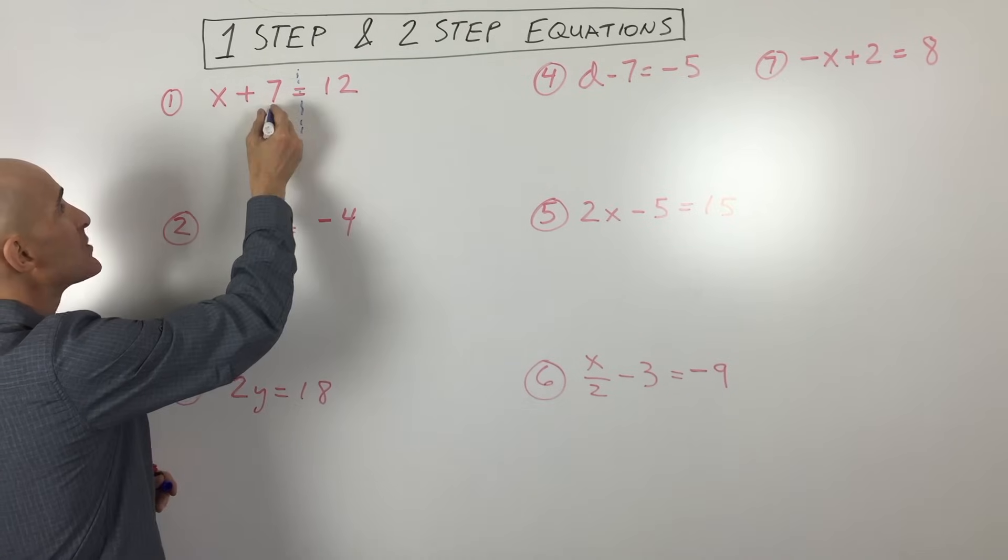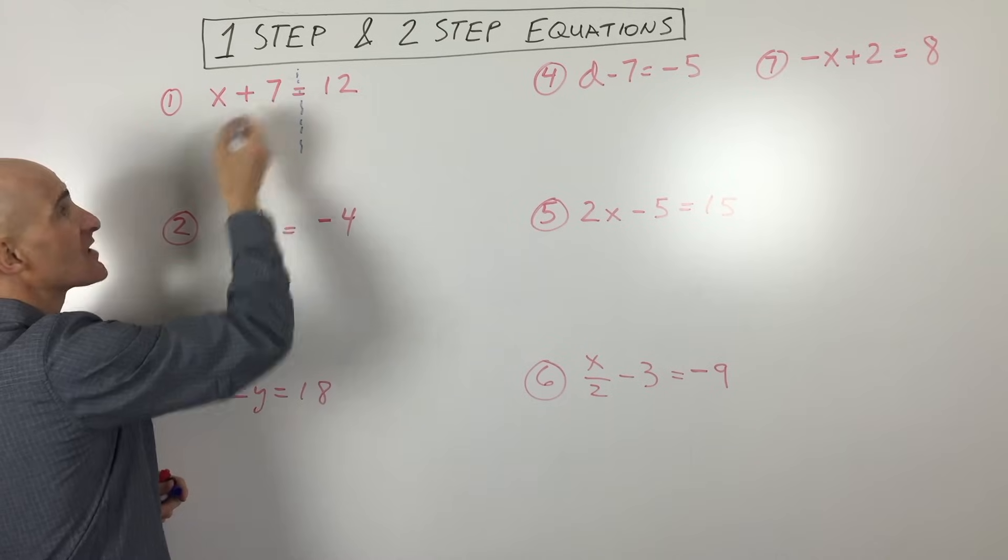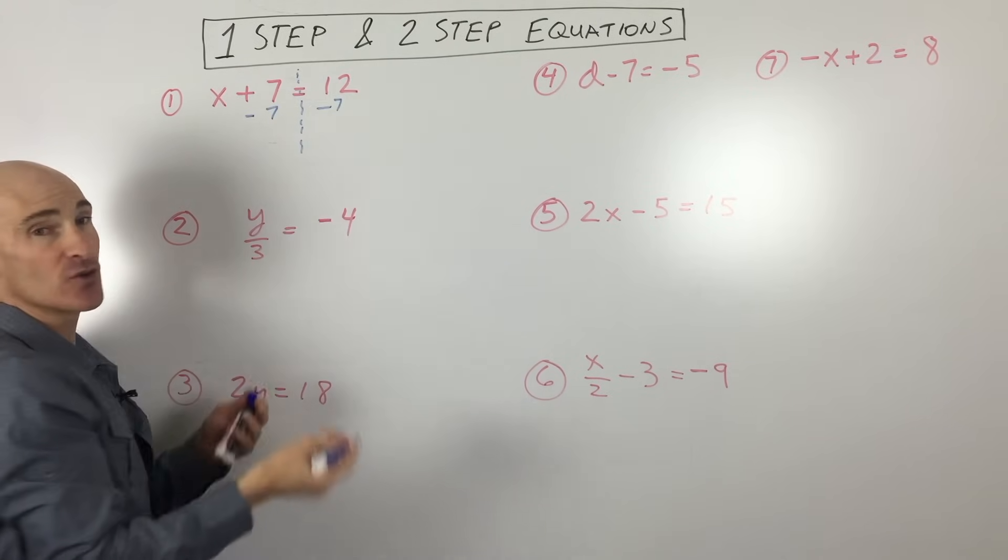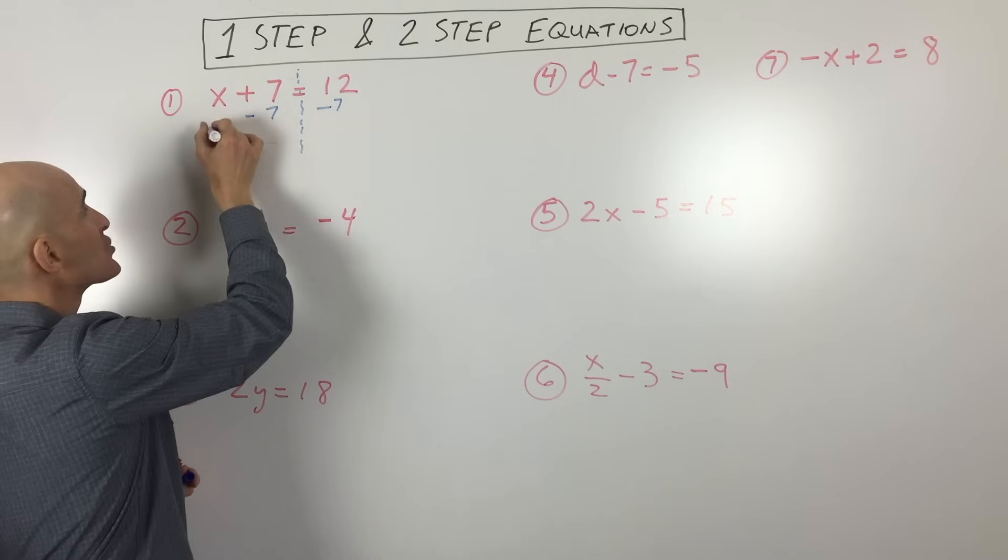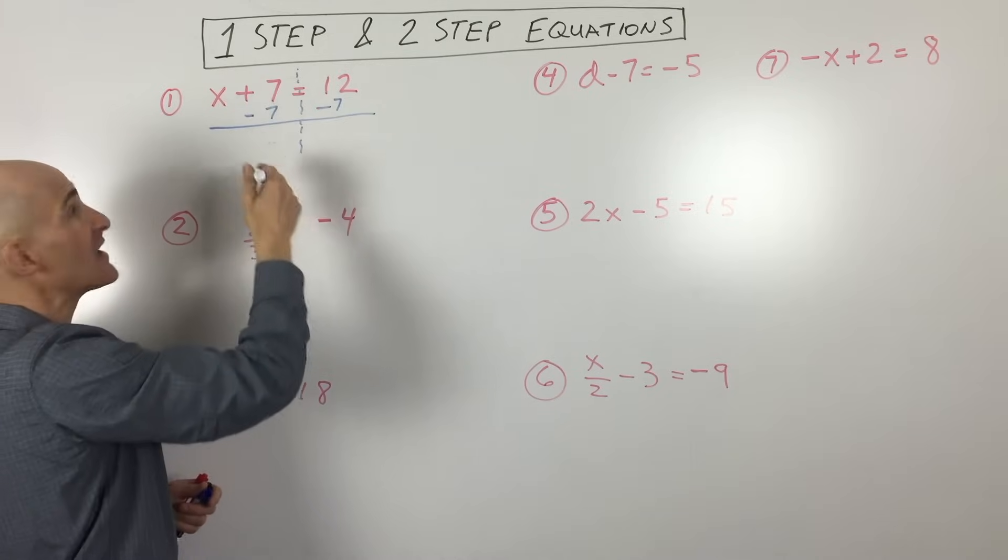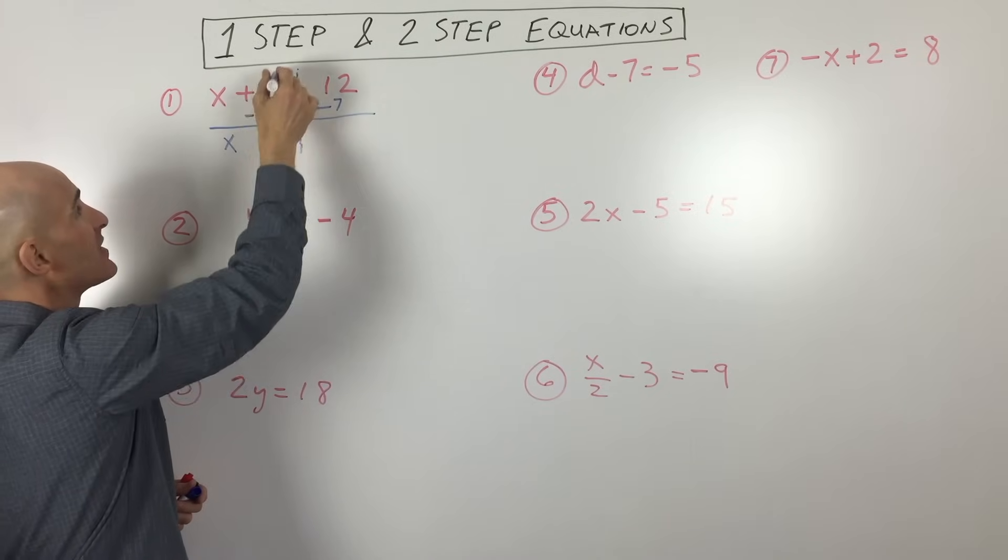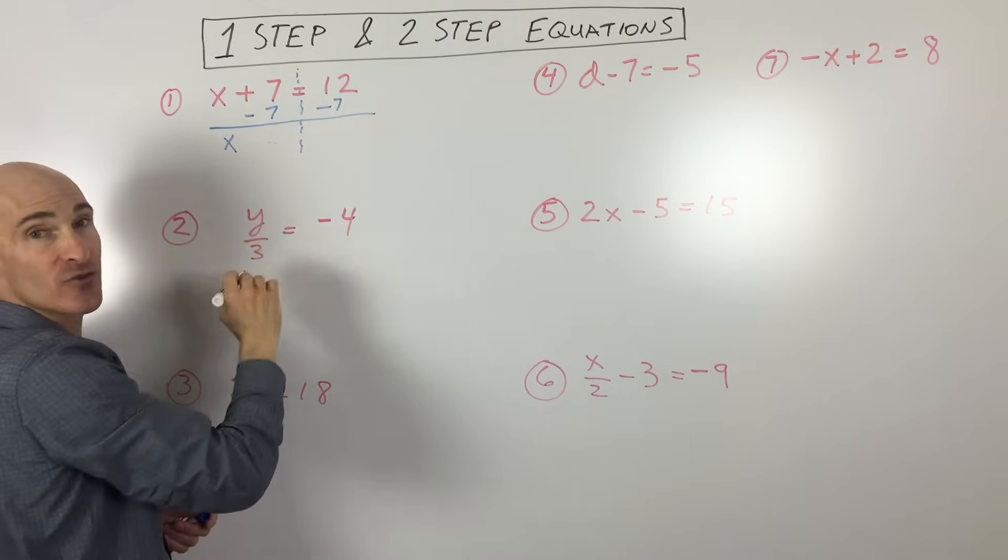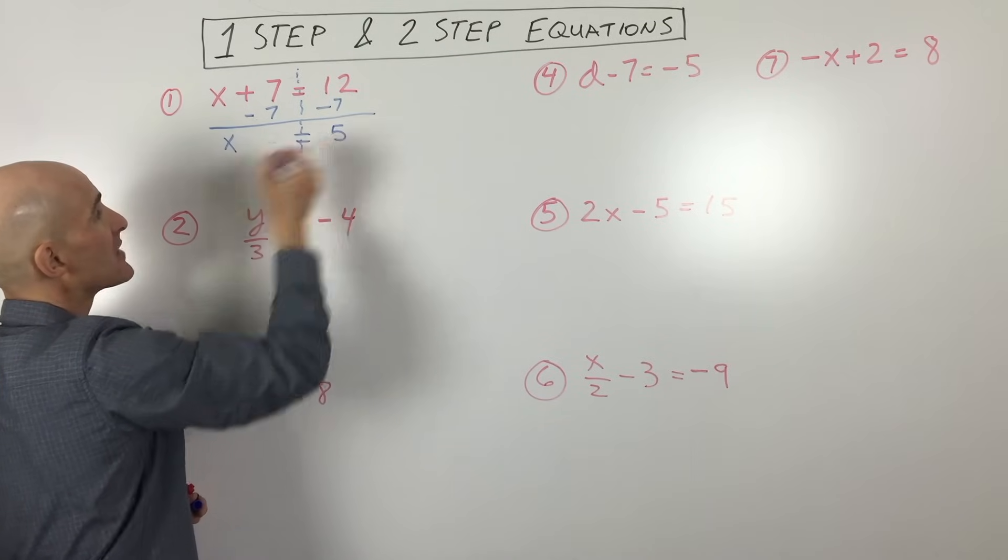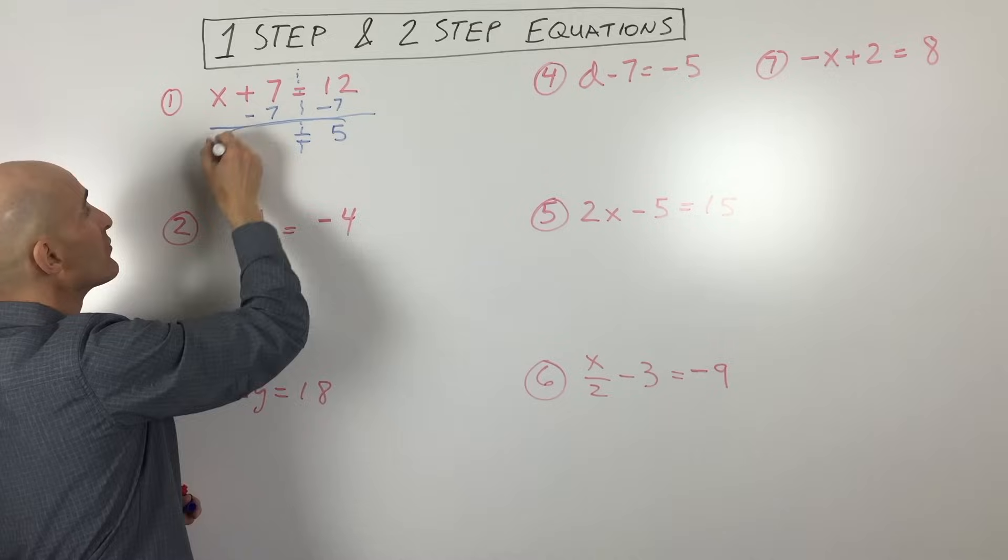So for this problem, you can see we're adding 7. We're going to subtract 7 from both sides of the equation to keep it balanced. I like to show the work as I do these problems, and I like to draw a line and then just go ahead and add straight down. So this will give us x. This is going to give us 0. You don't have to write 0. That's nothing. And then this equals 12 plus a negative 7, which is 5. And that's it. We've got it.